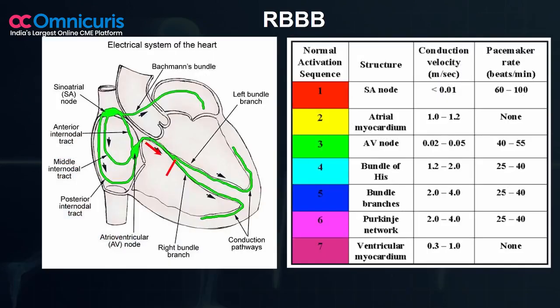If you have an impulse coming through the penetrating bundle of His, and the impulse gets blocked here at the right bundle branch, you find the impulse has to go down through the contralateral healthy bundle, which is the left bundle, and come left to right. The initial activation is from left to right, which is very similar to normal physiological activation.